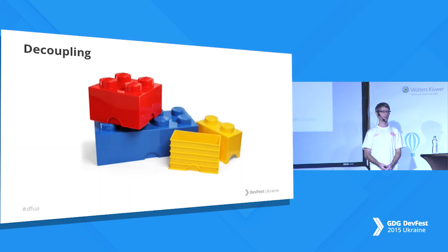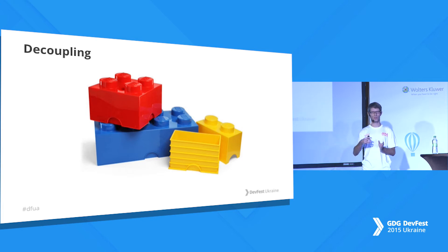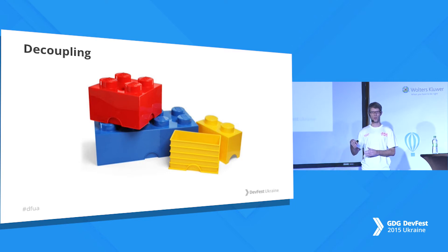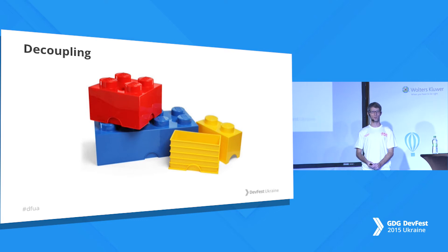Another benefit is that components are decoupled. If you have two separate components, there is a way how to communicate between them, and you need to specify exactly how to send messages from one component to the other. It's clear that it wouldn't affect other components, because there is only one specified way of communication. So you can use many different components and not care what each one does, because they all have a specified way of communicating.